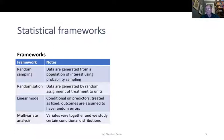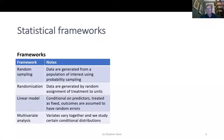Another method, particularly important for designed experiments, is randomisation: data are generated by random assignments of treatments to units. Note that randomisation is not the same as random sampling — the two are sometimes confused. Another framework is that of a linear model: chance enters the model and outcomes are assumed to have random errors and a predictable component. A fourth framework is multivariate analysis, where we consider variables varying together and study certain conditional distributions.